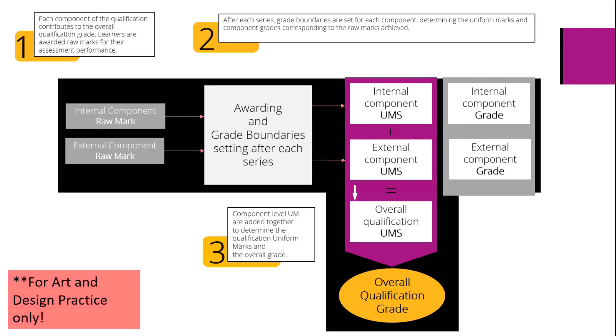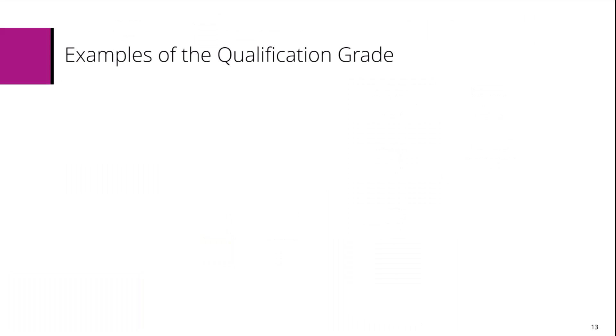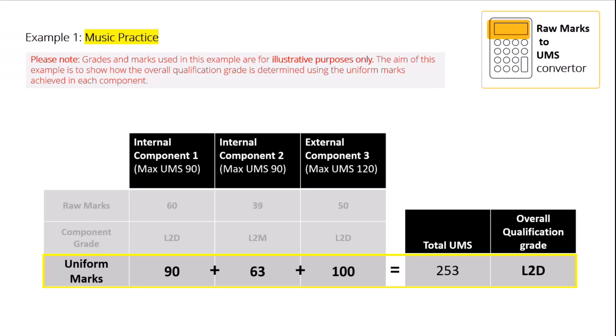The same logic applies for Art and Design Practice, but with two components only. We will now have a look at some examples demonstrating how the overall qualification grade is determined using the uniform marks achieved in each component. In this first example, the learner achieves a Level 2 distinction overall.